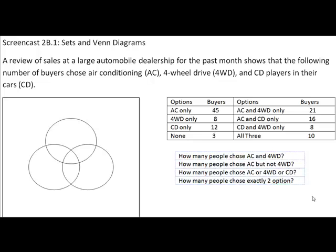If you look at the question in front of you, which if you are using Understanding Mathematics: A Quantitative Reasoning Approach by Bennett and Briggs, is number 81 on page 51 in your text. This problem states that a review of sales at a large automobile dealership for the past month shows the following number of buyers chose air conditioning, four-wheel drive, and CD players in their cars.